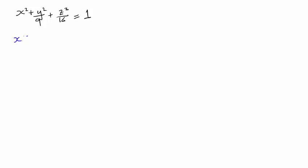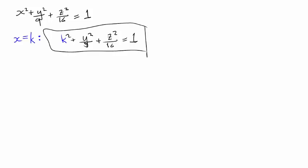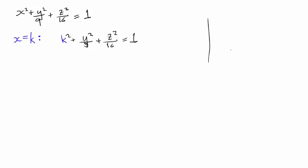Let's first say: what if x is just a constant number, k, let's call it. Plugging that into the equation, we'll have k squared plus y squared over 9 plus z squared over 16 equals 1. By restricting x to the constant value k, we're looking at an equation that only involves two variables, y and z, so its graph will be in the yz-plane, and it will depend on the value we've chosen for k.